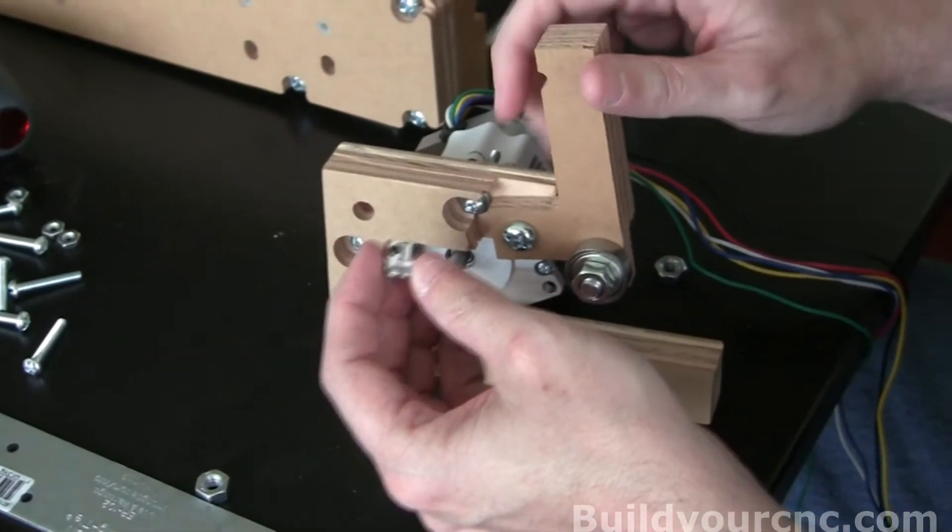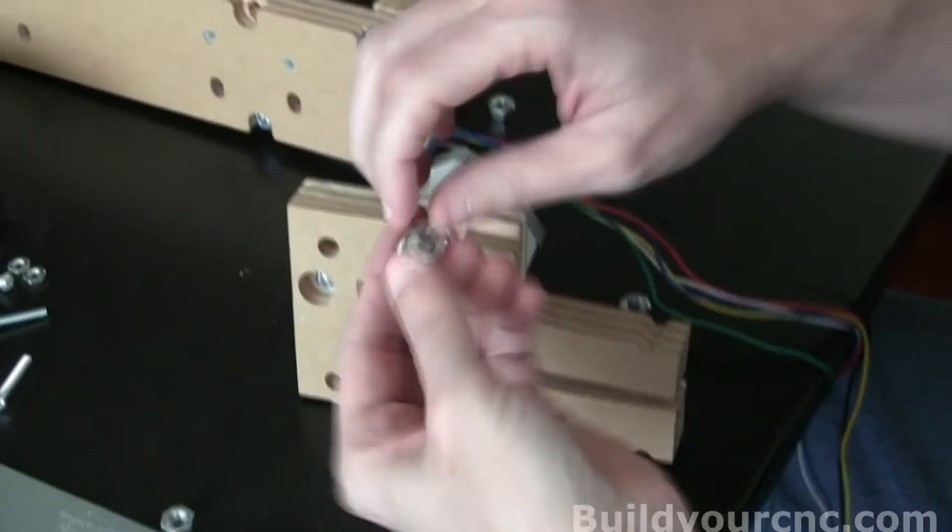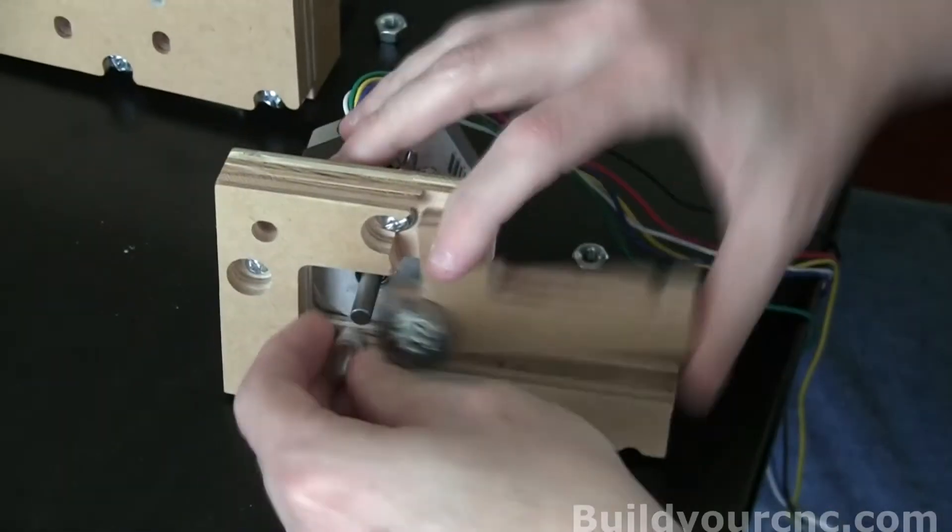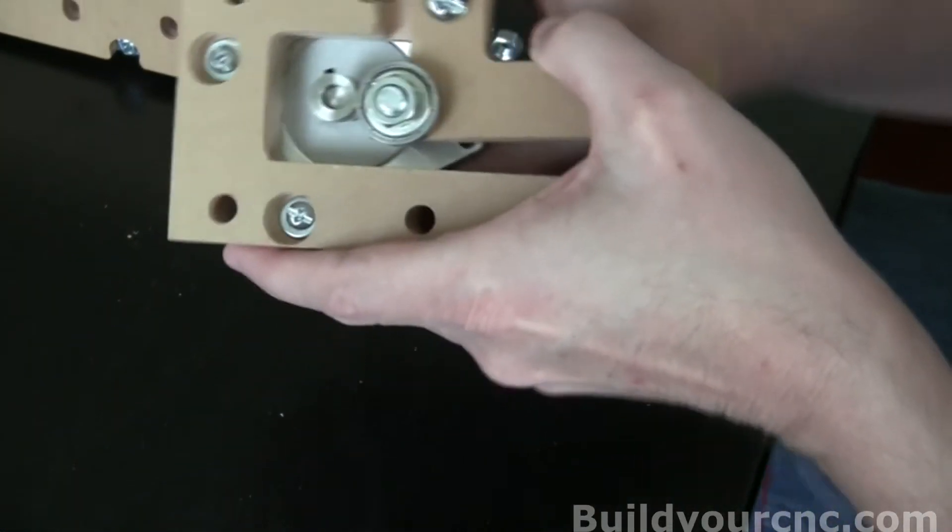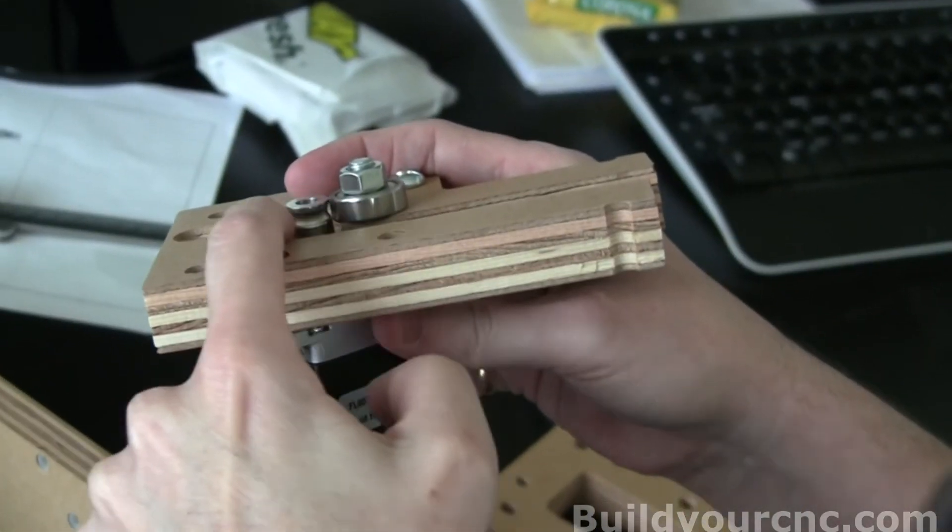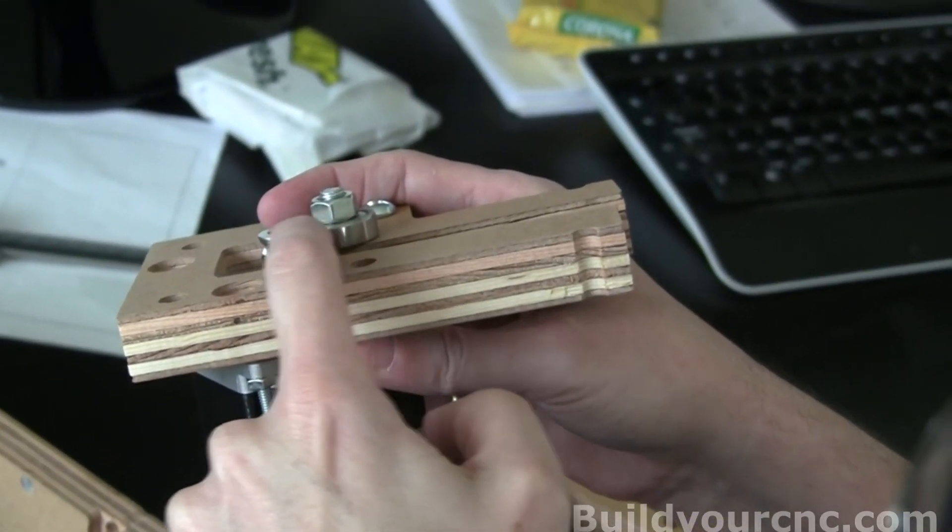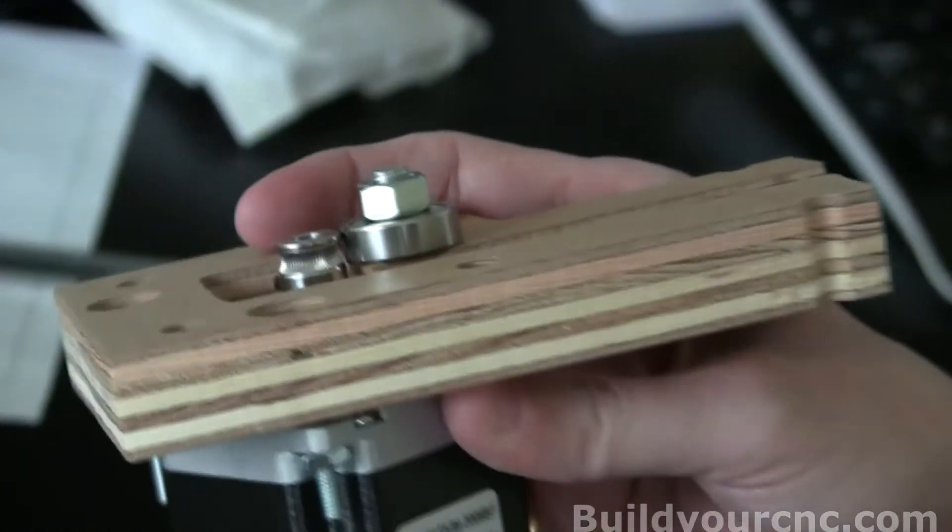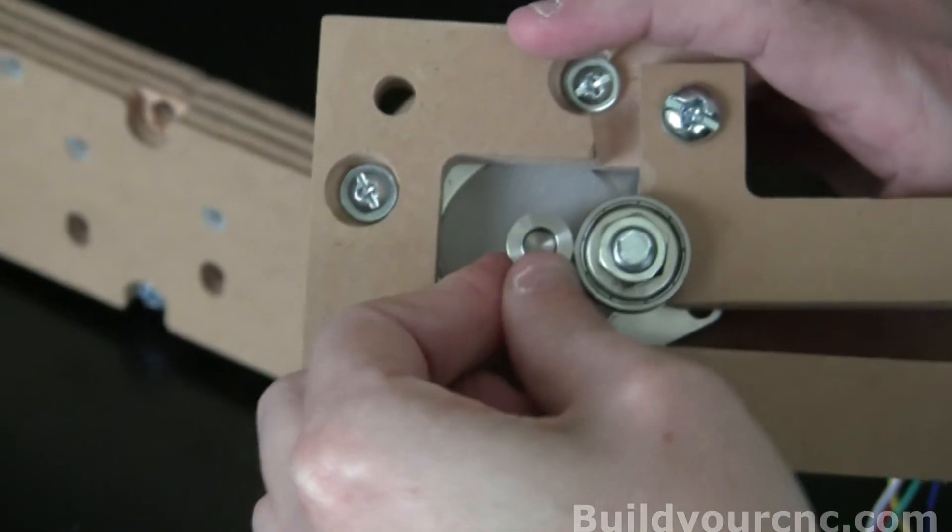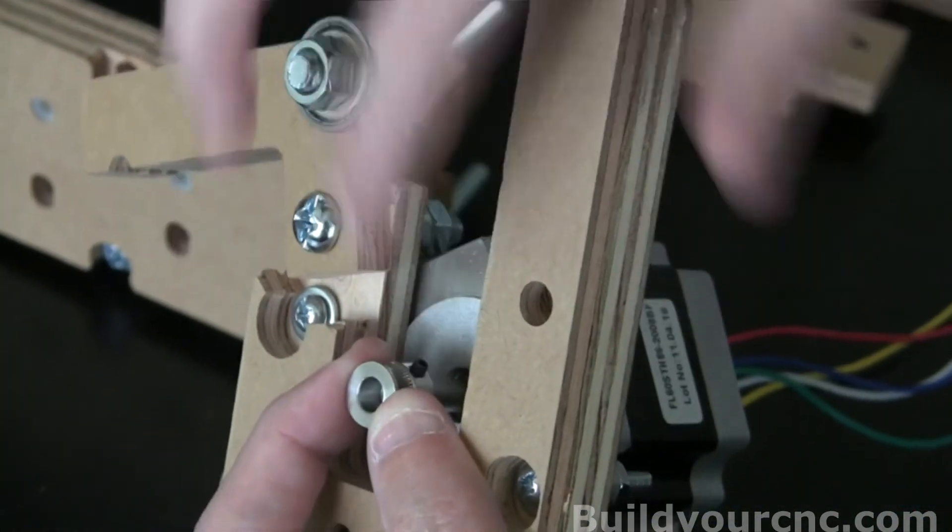You want to put the serrated hub onto the shaft of the stepping motor. Make sure that the serrated hub is equal, the serration part of the hub is equal with the bearing. Then you can tighten it down. You might have to have the set screw on this side. Try not to move it and then tighten the set screw.